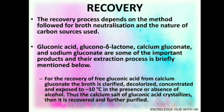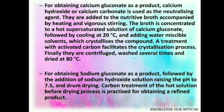For obtaining calcium gluconate as a product, calcium hydroxide or calcium carbonate is used as a neutralizing agent. They are added to the nutritive broth accompanied by heating and vigorous stirring. The broth is concentrated to a hot supersaturated solution of calcium gluconate, followed by cooling at 20 degrees Celsius and adding a water-miscible solvent which crystallizes the compound. A treatment with activated carbon facilitates the crystallization process. Finally, they are centrifuged, washed, and dried at 80 degrees Celsius. For obtaining sodium gluconate, sodium hydroxide solution is added, raising the pH to 7.5, followed by drum drying. Carbon treatment of the hot solution before drying is practiced for obtaining a refined product.